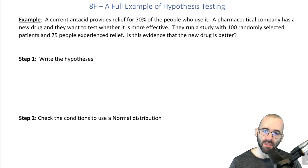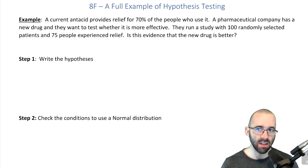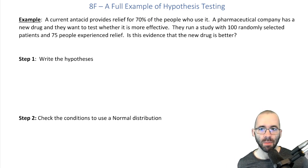Let's do another example from start to finish, putting all the pieces together so we can see the big picture. A current antacid provides relief for 70% of the people who use it. A pharmaceutical company has a new drug and they want to see whether it's more effective. They're going to run a study with 100 randomly selected participants. 75 of them experience relief. Is this evidence the new drug is better?